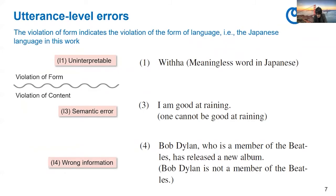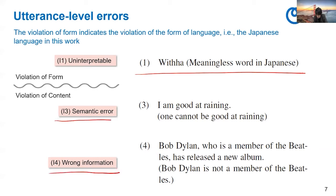Let me talk about the utterance-level errors. The violation of form in this level indicates the violation of the form of language — that is, the Japanese language in this work. As for the violation of form, we have, for example, I1 uninterpretable, which means that the utterance is uninterpretable. I2 is a meaningless word in Japanese and therefore violates the form of language. As for the violation of content, we have I3 semantic error — for example, 'I'm good at raining' — which is okay in form but semantically wrong since one cannot be good at raining.